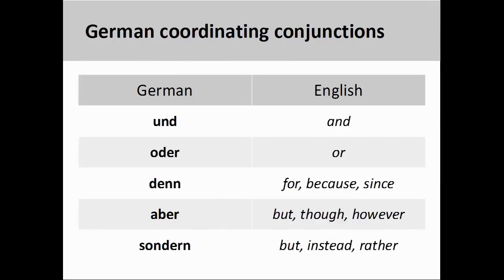German also relies on coordinating conjunctions to connect words, sentences, phrases, or clauses. The conjunctions most frequently covered in introductory German courses are: und, equivalent to the English AND; oder, meaning OR; denn, meaning FOR, BECAUSE, and SINCE; aber, meaning BUT, THOUGH, and HOWEVER; and sondern, meaning BUT, INSTEAD, and RATHER. The difference between aber and sondern will be covered in more detail at the end of this presentation. But first, let's take a closer look at how these conjunctions function in German sentences.